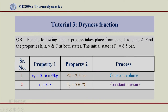Let us continue with the tutorial. Question b now again relates to dryness fraction and the problems associated with wet steam. For the following data, a process takes place from state 1 to state 2. Find the properties h, s, v, and t at both states.